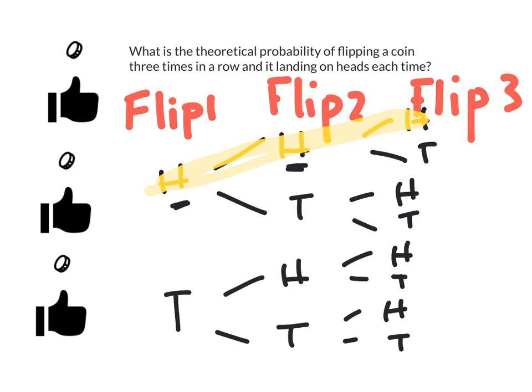We see how many branches we have at the end of our tree. We have 1, 2, 3, 4, 5, 6, 7, 8 possible outcomes. So that's the bottom of my fraction.